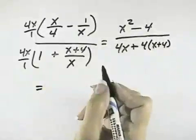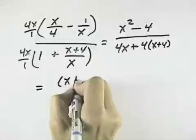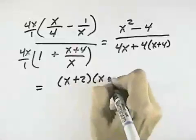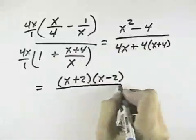From here, if we'd like to see if it'll simplify or not, we can factor the numerator into the sum and difference of the squares, square roots, because x squared minus 4 is a perfect square.